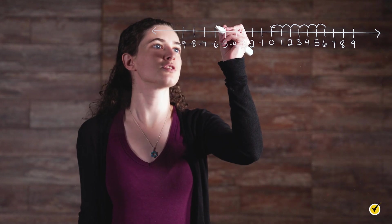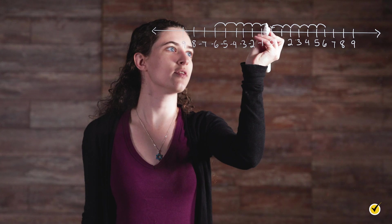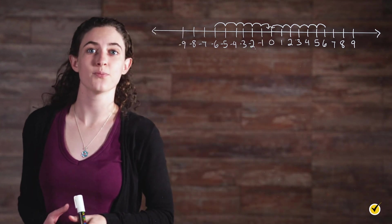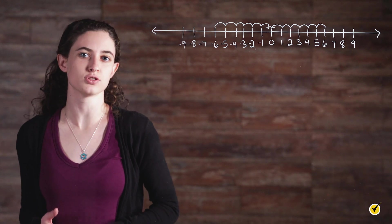Negative six is also one, two, three, four, five, six units away from zero. Therefore, the absolute value of negative six is also six.